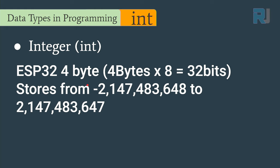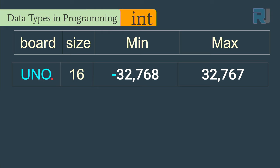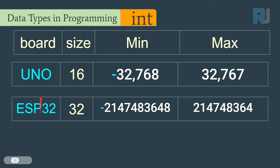ESP32 uses 32-bit integers. For Arduino Uno it is 16 bits, giving a range from -2 to the power 15 to 2 to the power 15 minus 1. For ESP32 and Arduino Due the range is -2 to the power 31 to 2 to the power 31 minus 1. These are the minimum and maximum values for each board.